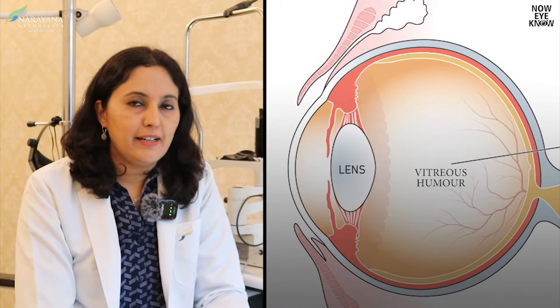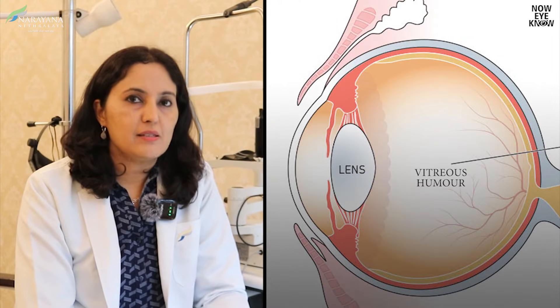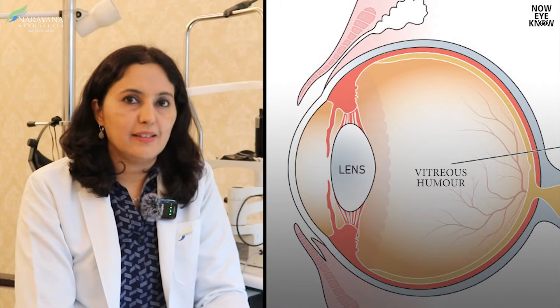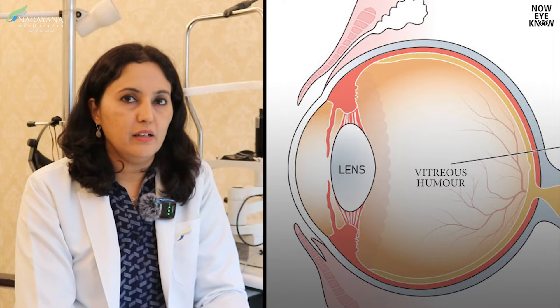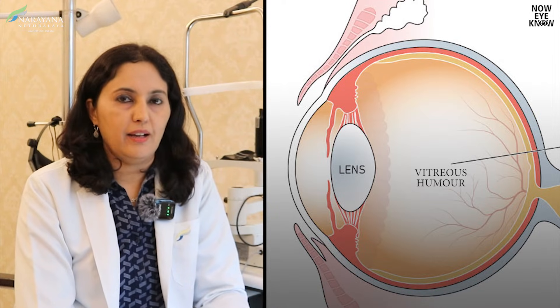The gel inside your eye is important to a certain extent only. If the gel is clean and clear, you will see well. If the gel becomes infected or bleeding develops into the gel, then visibility reduces. So we intend to remove this gel and replace it with several substances.